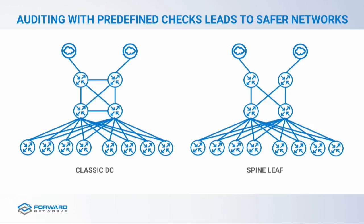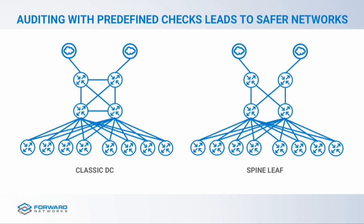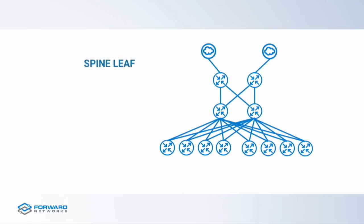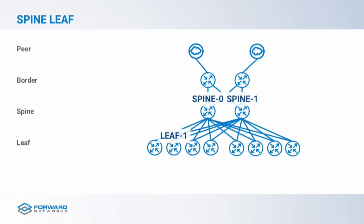So our predefined checks aren't just about VLANs or just L2 networks. We're going to look at a totally different network running ISIS throughout, all the way to these routers. We're running an L3 routing protocol, which should mean that if a device goes down, we'll just reroute around it. This is a fundamentally more resilient and robust network — and that's exactly what our marketing team told Uptime Bank when they threatened to leave.